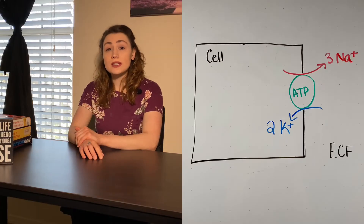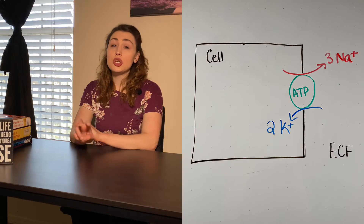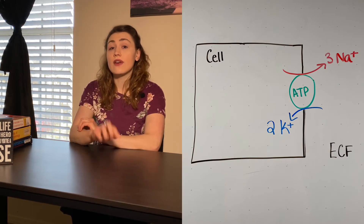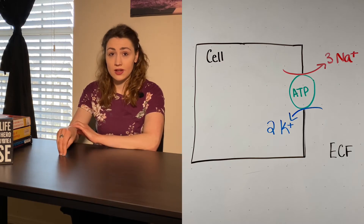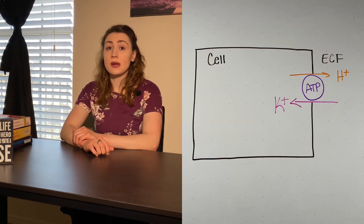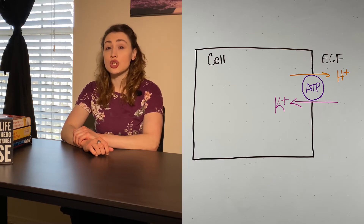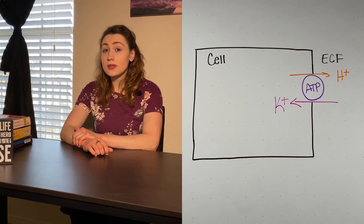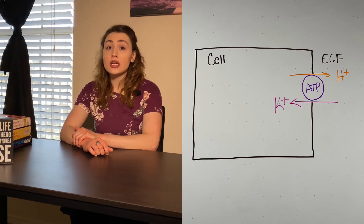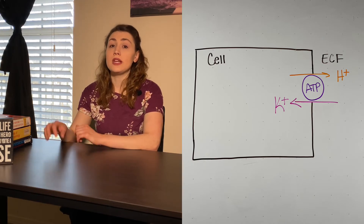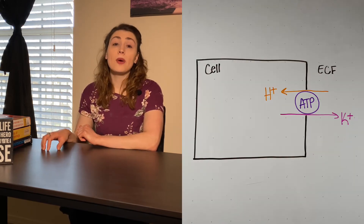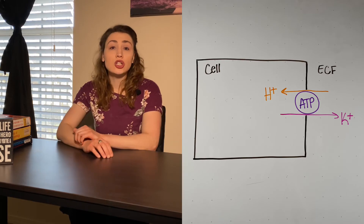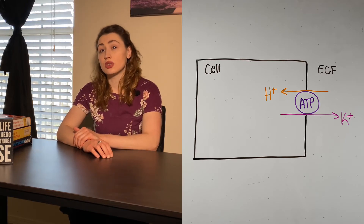The sodium-potassium pump moves two potassium ions into the cell for every three sodium ions that it takes out of the cell. The hydrogen-potassium pump moves potassium and hydrogen in opposite directions. Unlike the sodium-potassium pump, the hydrogen pump can move potassium either into or out of the cell, but whichever way it's moving potassium, hydrogen has to go in the opposite direction.